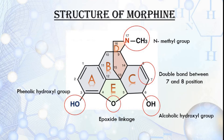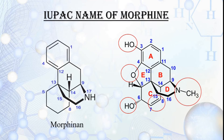The structure of morphine is composed of five fused rings with five chiral centers. Ring A is a benzene ring, ring B is cyclohexane, ring C is cyclohexane, ring D is piperidine, and ring E is tetrahydrofuran. The functional groups include: a phenolic hydroxyl group at position 3 attached to ring A, an epoxide linkage at positions 4 and 5, an alcoholic hydroxyl group at position 6, a double bond at positions 7 and 8, and a methyl group at position 17 attached to nitrogen.